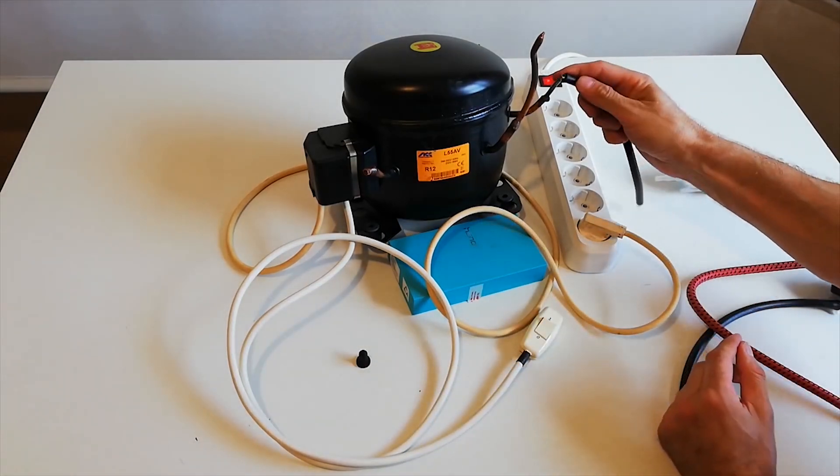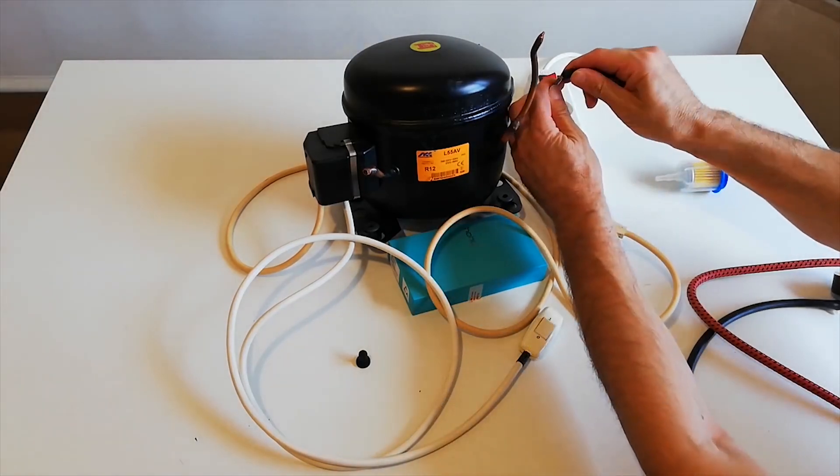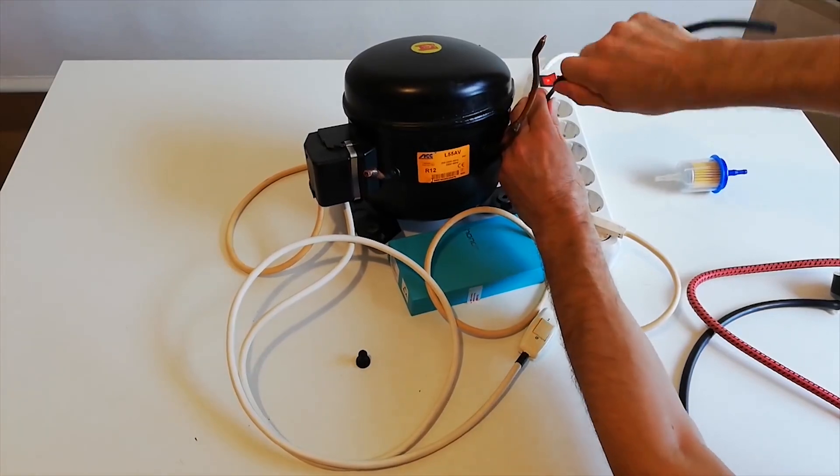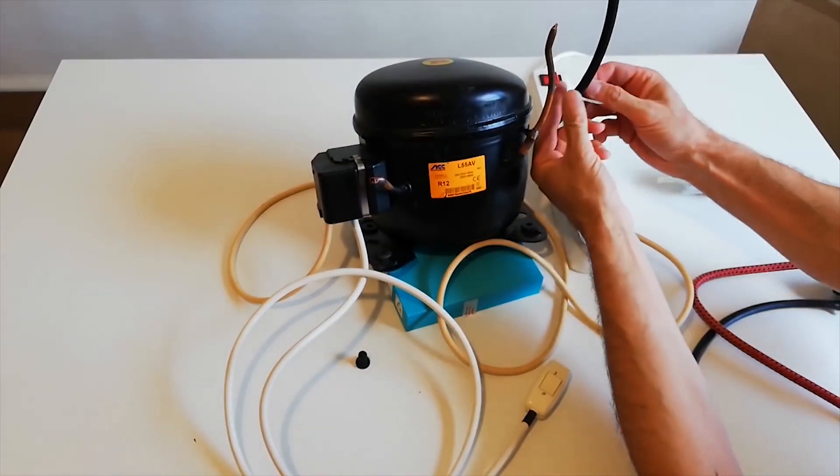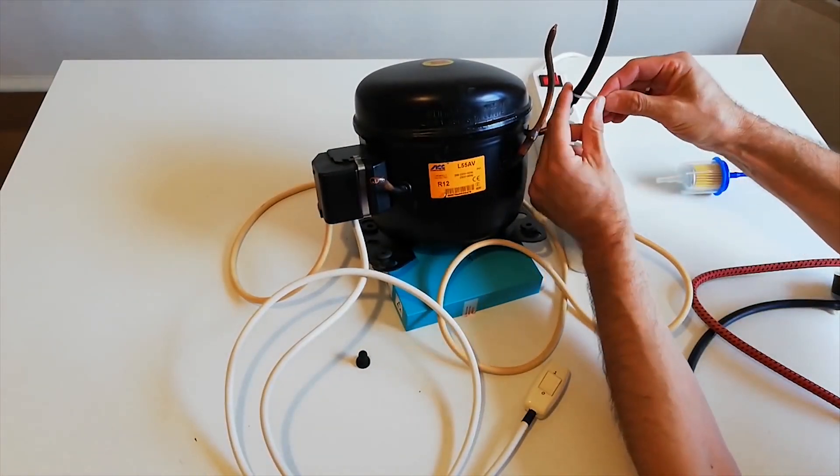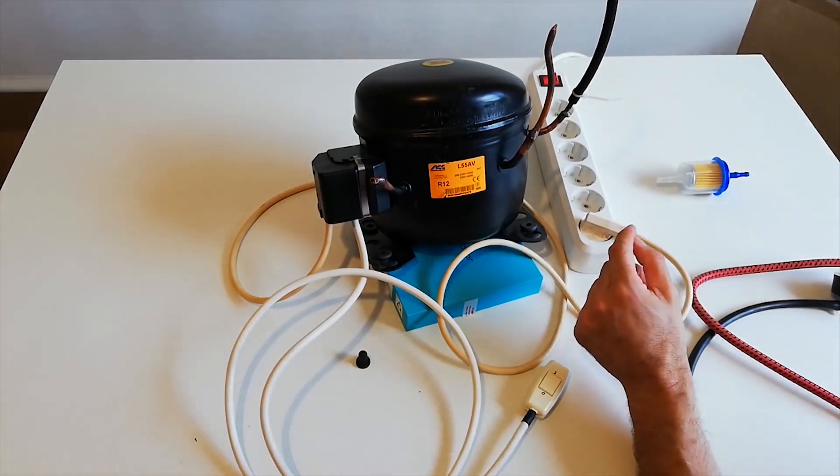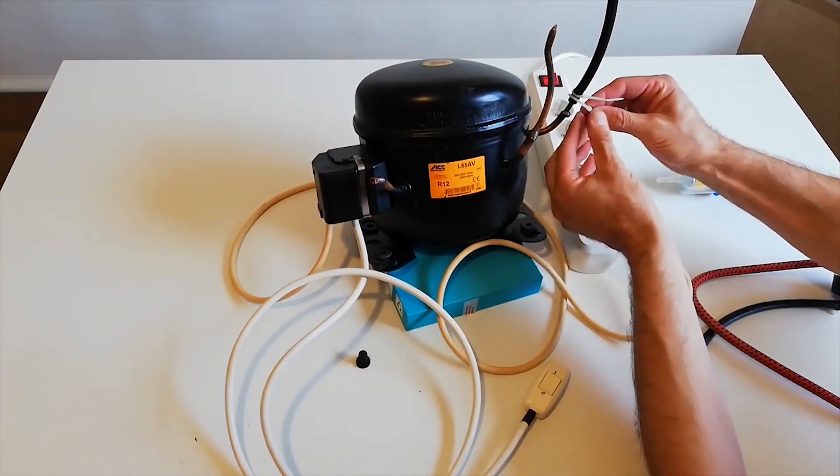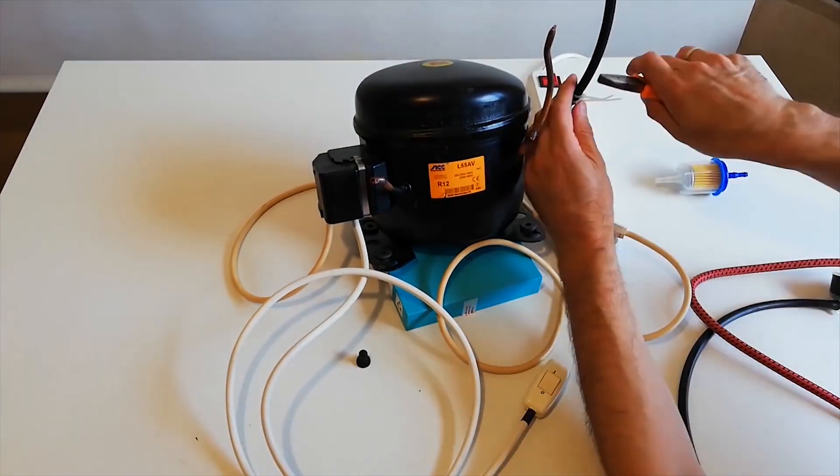Here we have one rubber hose that we can place on the pressure pipe. We will fasten it with a cable tie. So that the hose does not fall out, we will put two cable ties just in case. We will tighten them.